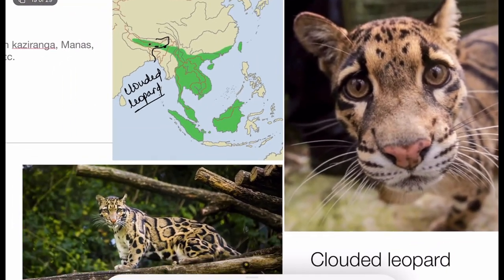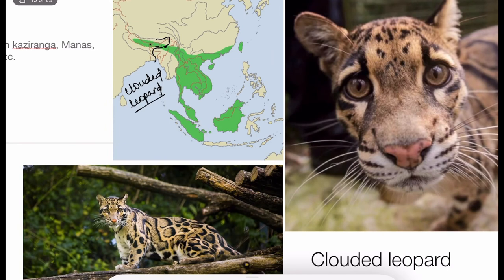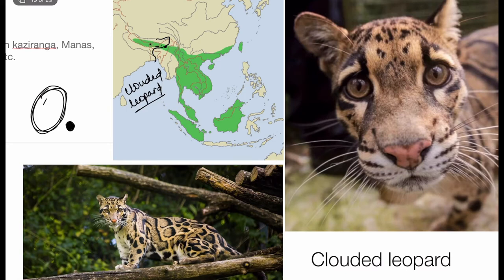This is the clouded leopard. The spots of a normal leopard are completely solid and filled. But the spots of the clouded leopard have only a black boundary — in the middle they appear hollow. So the clouded leopard's spots are hollow, unlike the solid spots of a regular leopard.